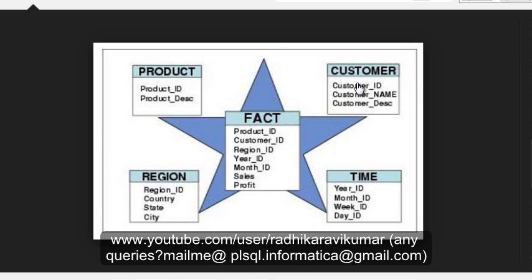That is what fact and dimension are in simple form. If you want more detail, you can google it — there's lots of information available. I'm just giving a brief, simple explanation of what facts and dimensions mean. Hope you guys have understood this.